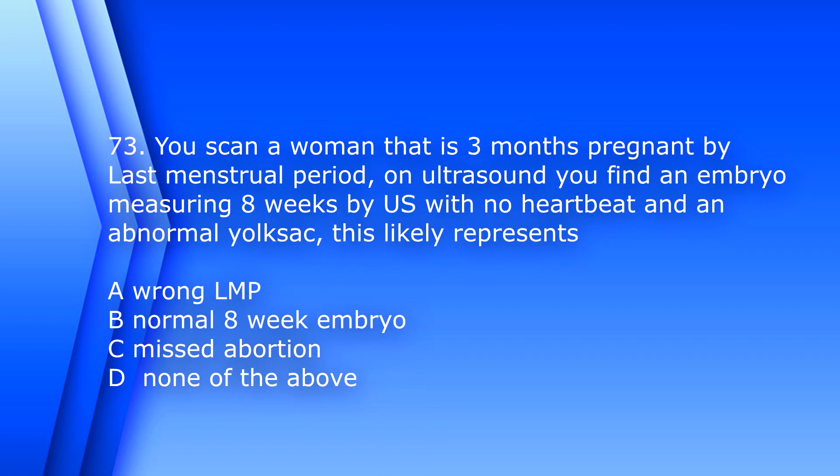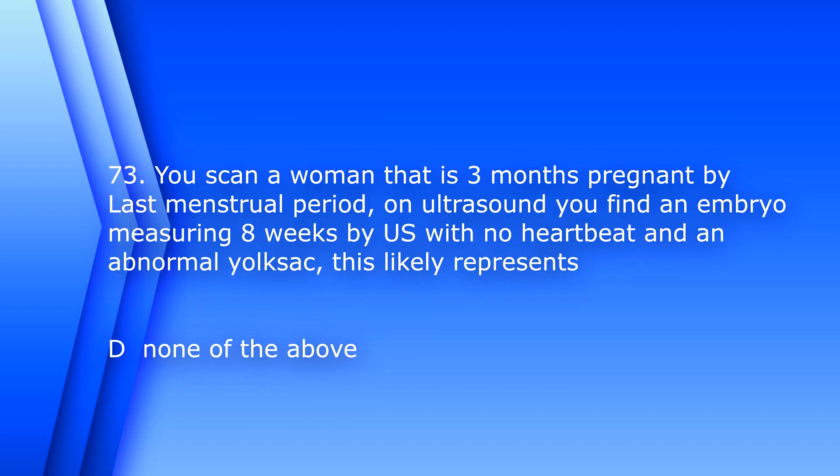Question 73. You scan a woman who is three months pregnant by last menstrual period. On ultrasound, you find an embryo measuring eight weeks by ultrasound dates with no fetal heartbeat and an abnormal yolk sac. This likely represents: A. Wrong last menstrual period, B. Normal eight-week embryo, C. Missed abortion, D. None of the above. The answer is D, None of the above.